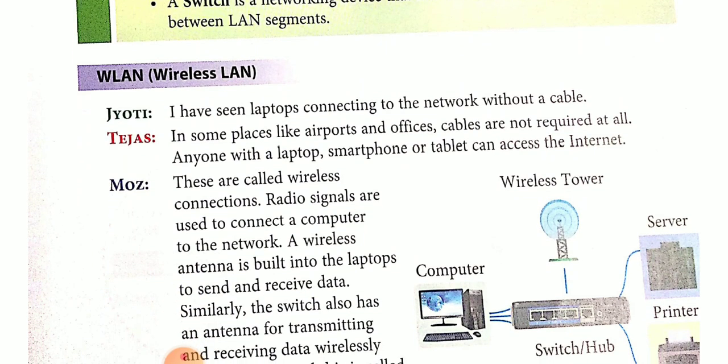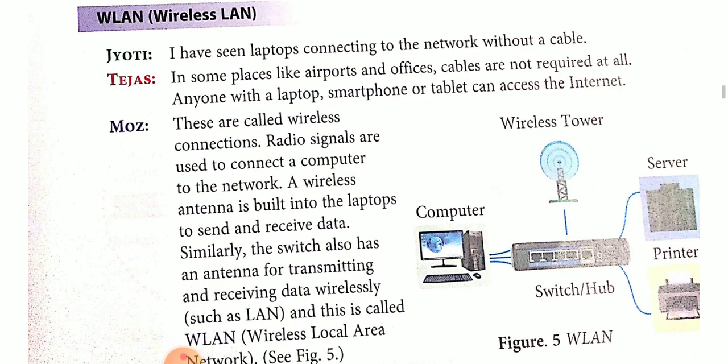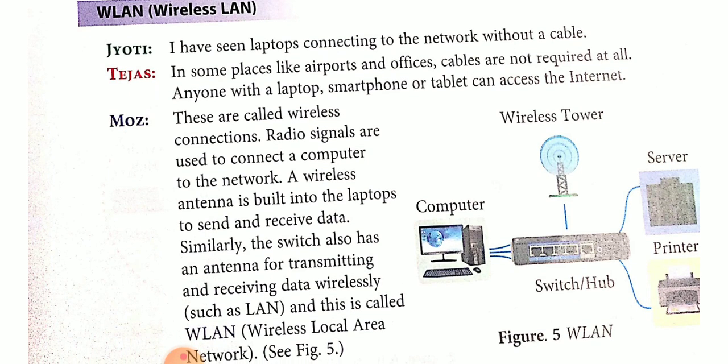Now move to the next point — WLAN. WLAN means Wireless LAN. The full form of LAN is Local Area Network. I have seen laptops connecting to the network without a cable. You all are connecting your laptop with the use of Wi-Fi. It is called a Wireless LAN and it is also called Wi-Fi. In some places like airports, cables are not required at all.